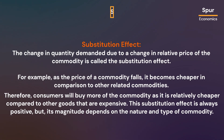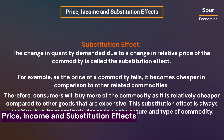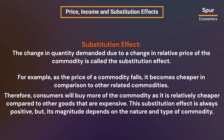The change in quantity demanded due to a change in relative price of the commodity is called the substitution effect. For example, as the price of a commodity falls, it becomes cheaper in comparison to other related commodities. Therefore, consumers will buy more of the commodity as it is relatively cheaper compared to other goods that are expensive. This substitution effect is always positive, but its magnitude depends on the nature and type of commodity.